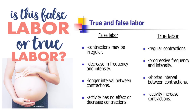I hope you all understood these basic differences. In false labor, the contraction is irregular, the frequency is not going to increase, there is a long interval between contractions, and the contraction intensity is decreased. In true labor pain, the frequency and intensity increase progressively.